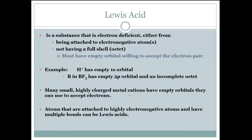Lewis acid is a substance that is electron-deficient, either from being attached to an electronegative atom, or not having a full set, or an octet. They must have an empty orbital willing to accept that electron pair. Example is H+, with an empty 1s orbital, or B and BF3 with an empty 2p orbital, and an incomplete octet.